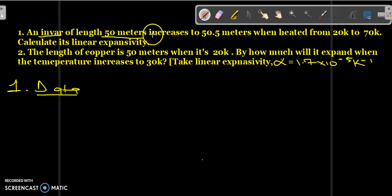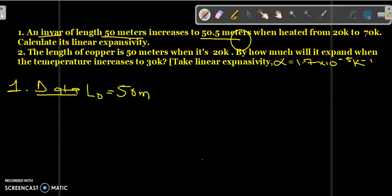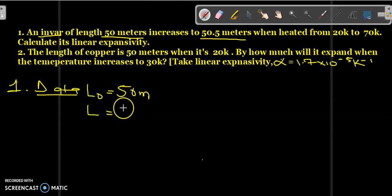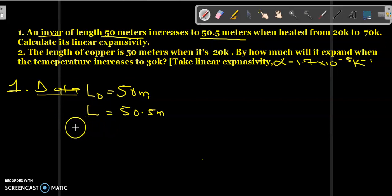An iron bar of length 50 meters: write the original length, which is the length of the iron bar, as 50 meters. It increases to 50.5 meters when heated from 20K to 70K, which means the increase in length is 50.5 meters.